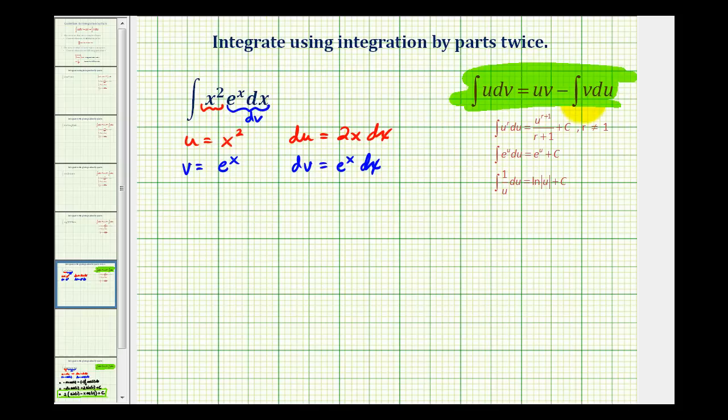Now we'll apply the integration by parts formula. The original integral is equal to u times v, which would be x squared e to the x, minus the integral of v du. Here's v and here's du, so we'll have two times the integral of x e to the x dx.